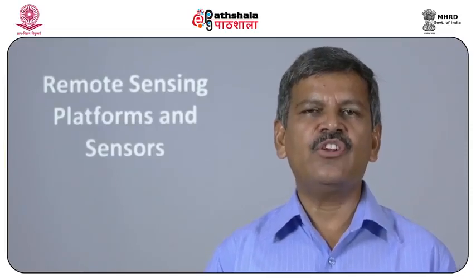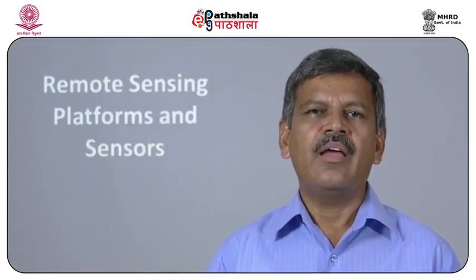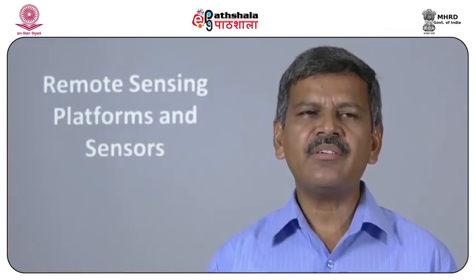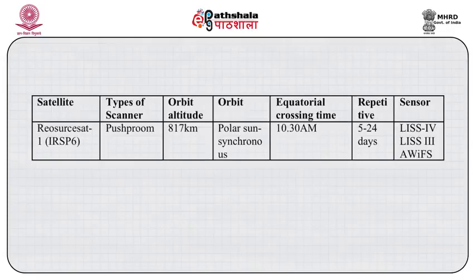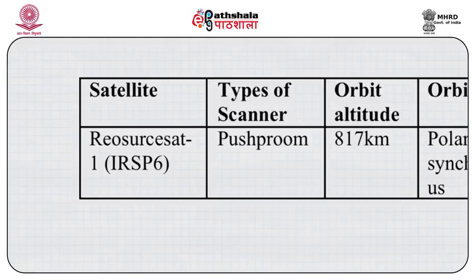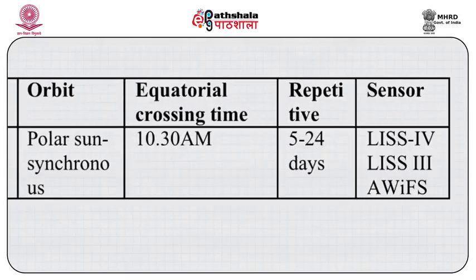Come to the IRS series. The IRS series includes ResourceSat and CartSat sensors. ResourceSat-1 is also known as IRS P6. It has a push-broom scanner. The orbit altitude is 817 km. Orbit type is polar synchronous. Equatorial crossing time is 10:30 a.m. Revisit days are 5 to 24. The sensors on board are LISS 4, LISS 3, and AWiFS.